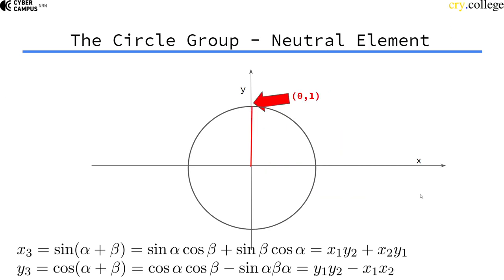And what would be the neutral element? Well, the (0,1) element, because if I add the angle which is 0 to something else, I'll get always to something else. So this is the neutral element.